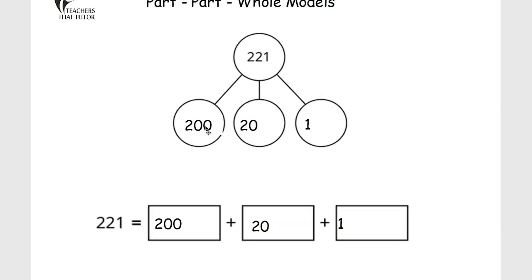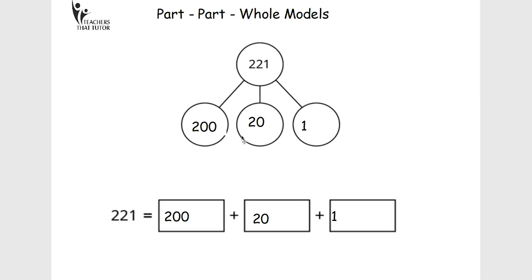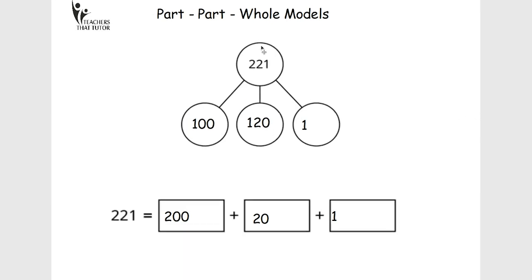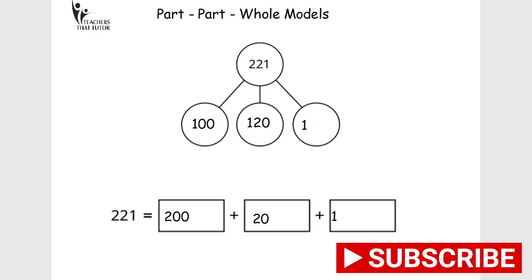But also, it doesn't have to be partitioned that way. I've just chosen to do hundreds, tens, and ones. You could do, if you wanted to, and this is where the mastery comes in, you could do 120, you could do 1 over here, and you could do 100 over here. And it's just showing from the children that they can part a number into different parts in lots of different ways. And that's the depth of understanding that you really want from your children.